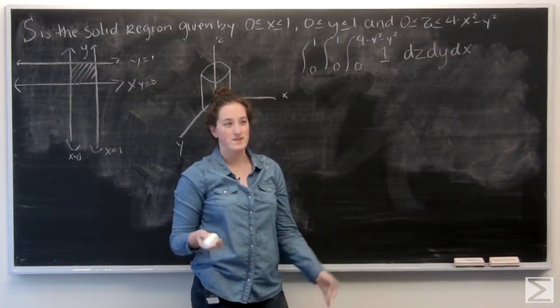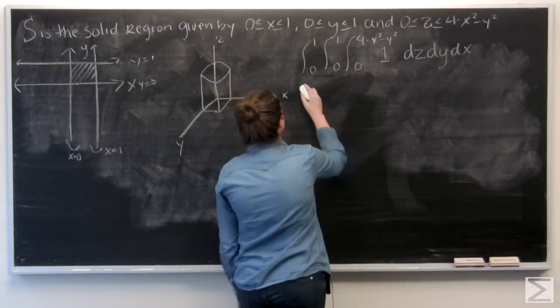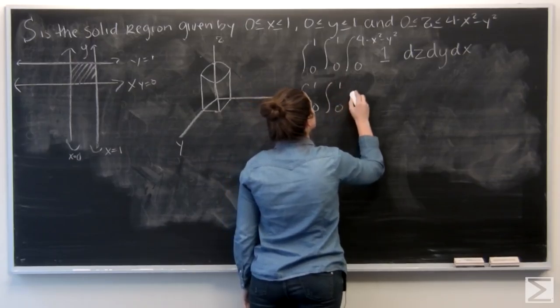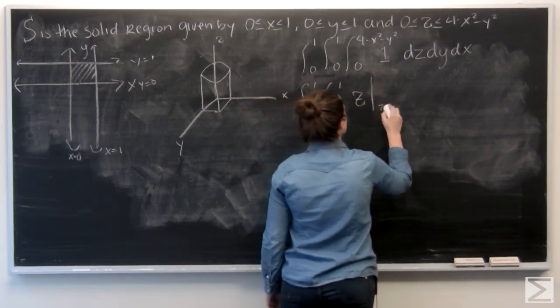So integrating 1 with respect to z is just going to be z. It's pretty easy. And I want to evaluate that.